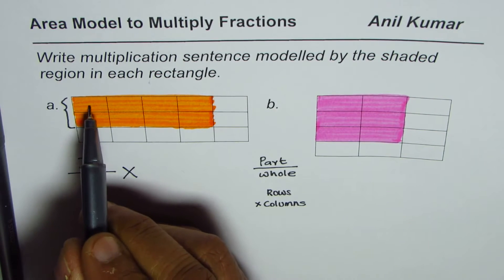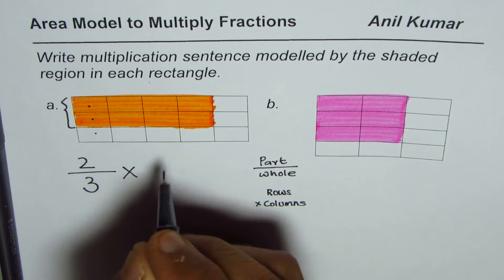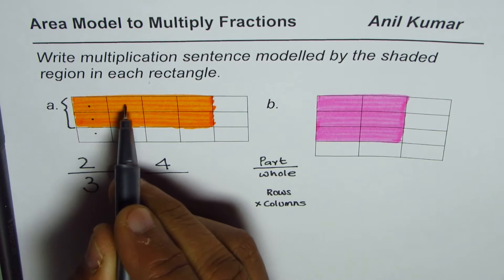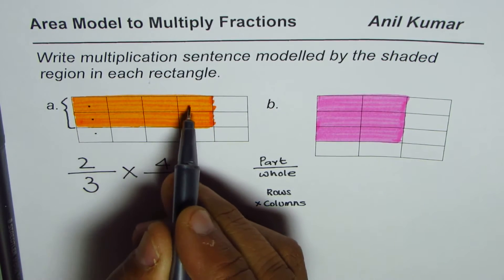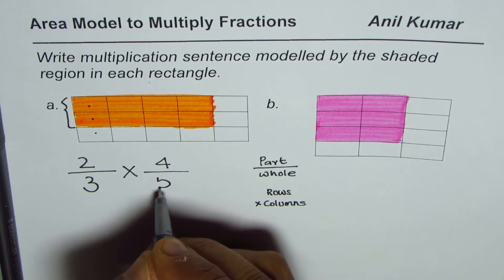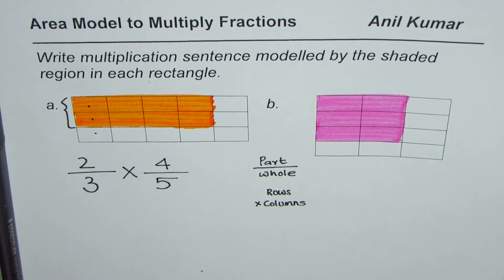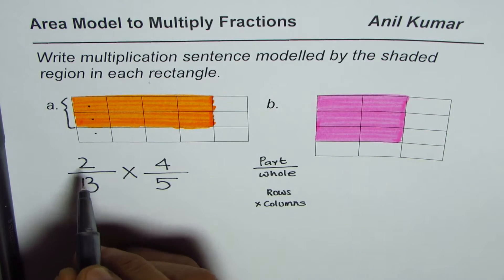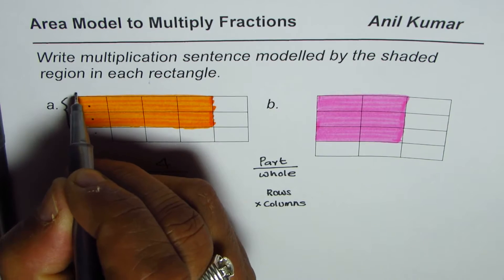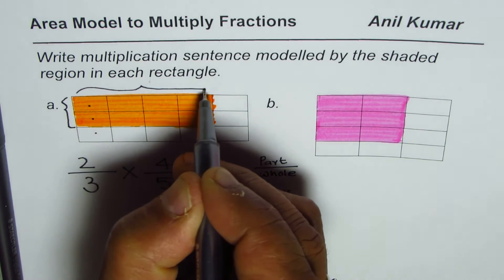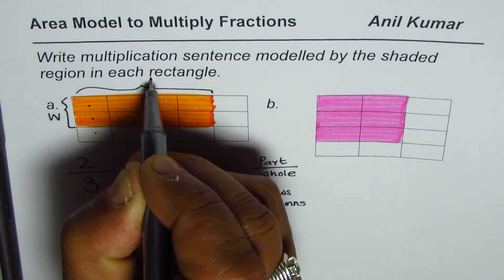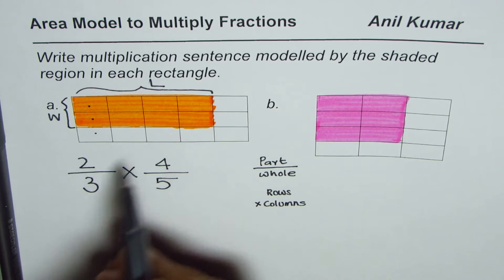Now what is the length of the shaded region? We multiply the two to get area. One, two, three, four are shaded out of one, two, three, four, five. So four out of five are shaded — that becomes the length. So the width is two-thirds and the length is four-fifths.